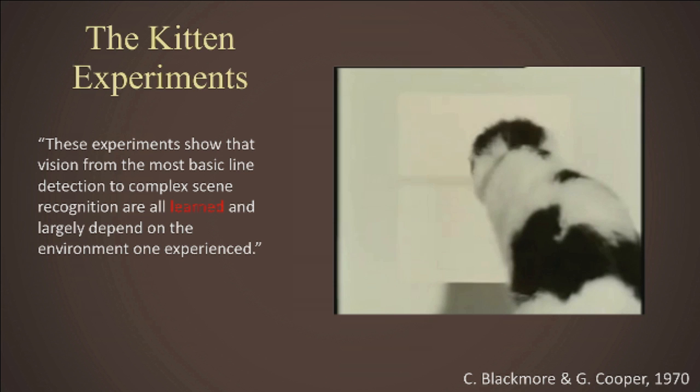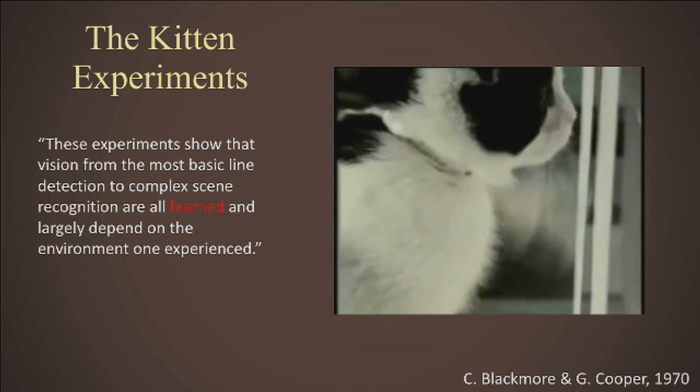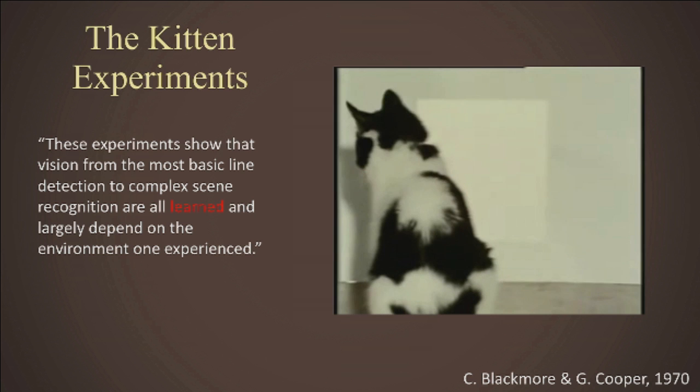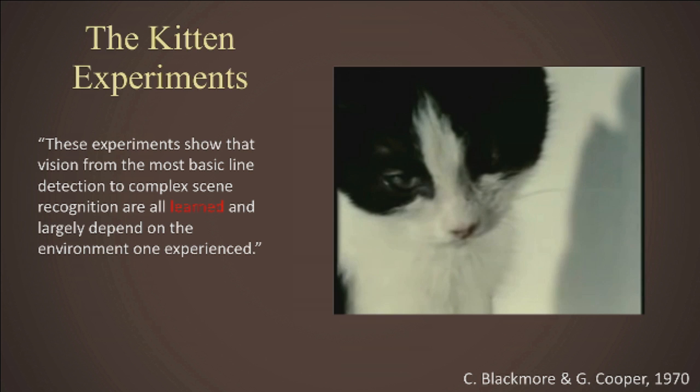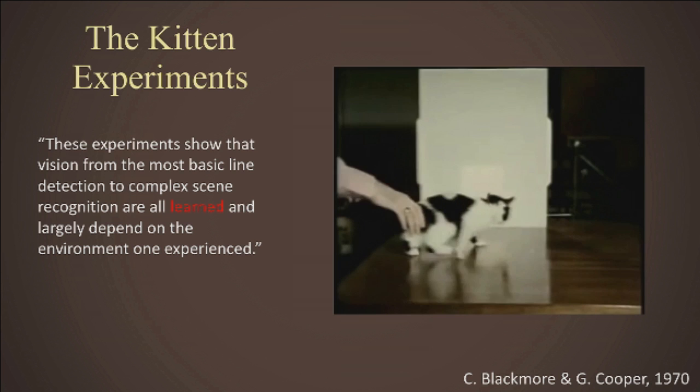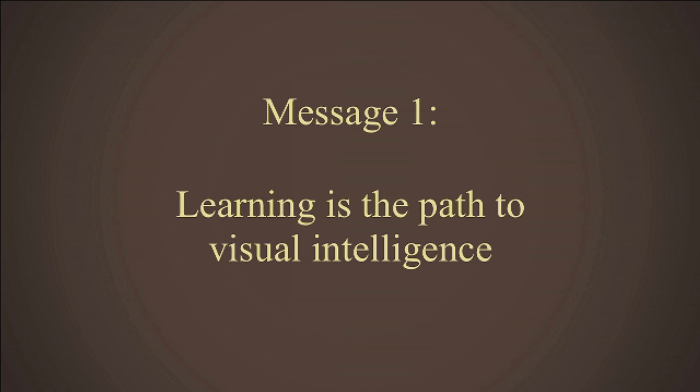This is a remarkable experiment — though scientists may not be allowed to do it today. But it underscored one very important aspect of intelligence: the ability to learn. Learning is the most critical part of high animal and human intelligence. And this is what we need to enable computers to do. On this quest for visual intelligence, the first message we learned is that learning is the path to visual intelligence.